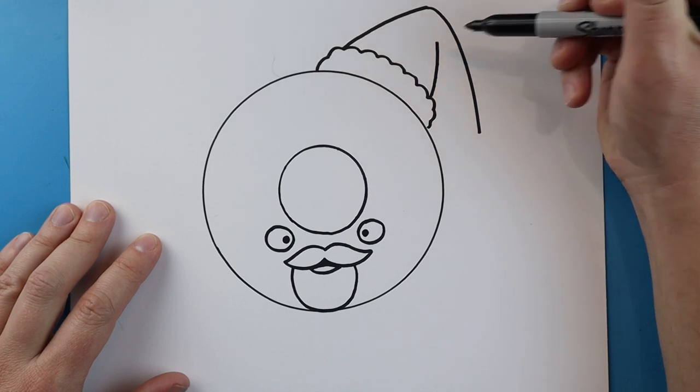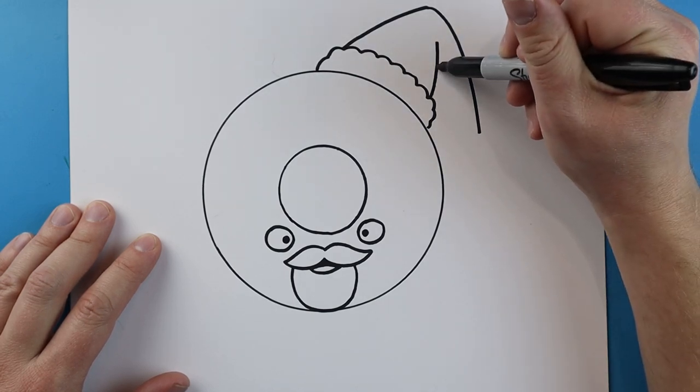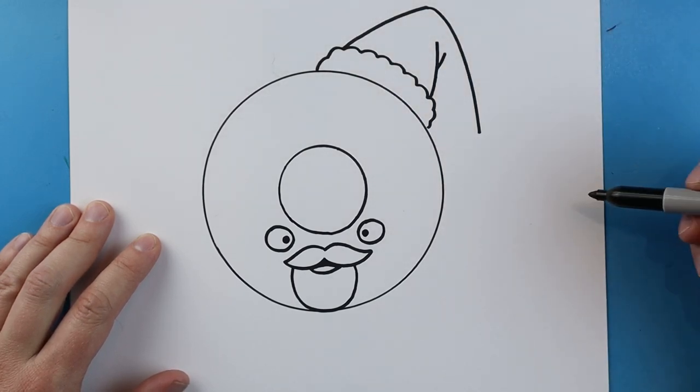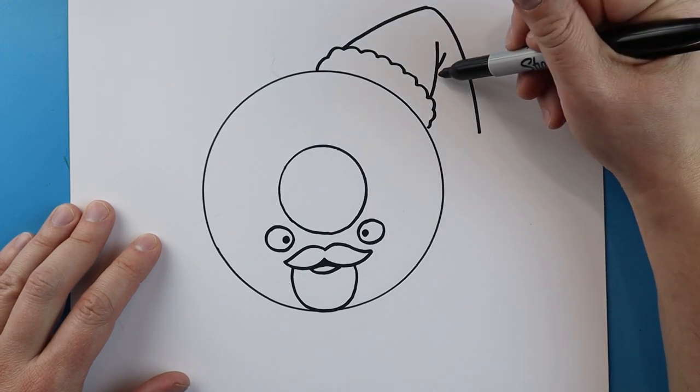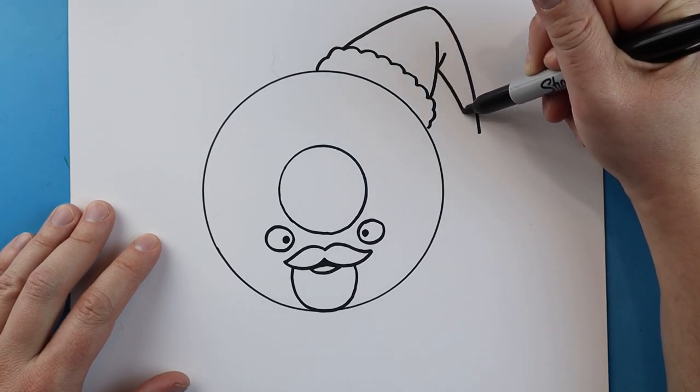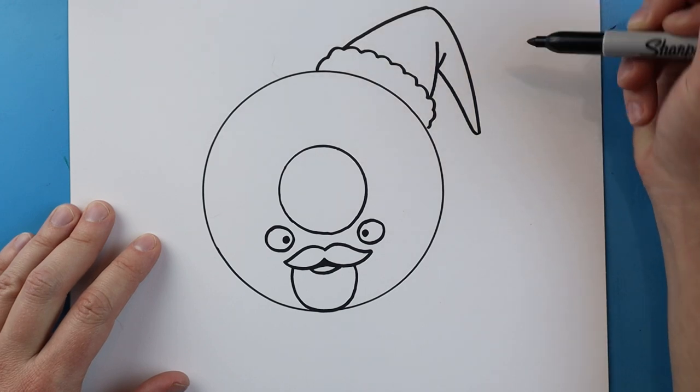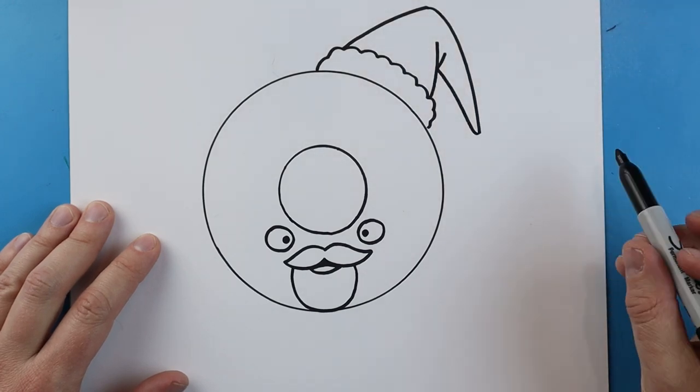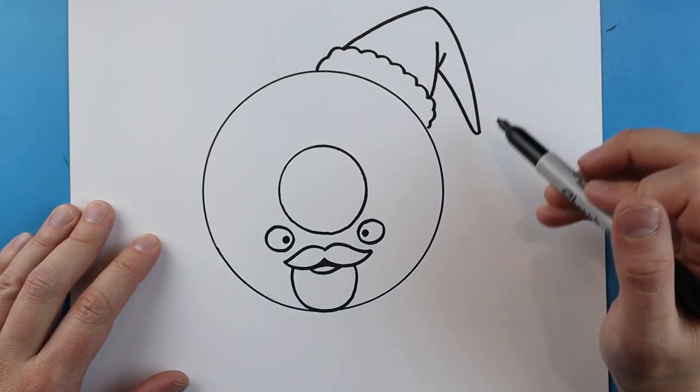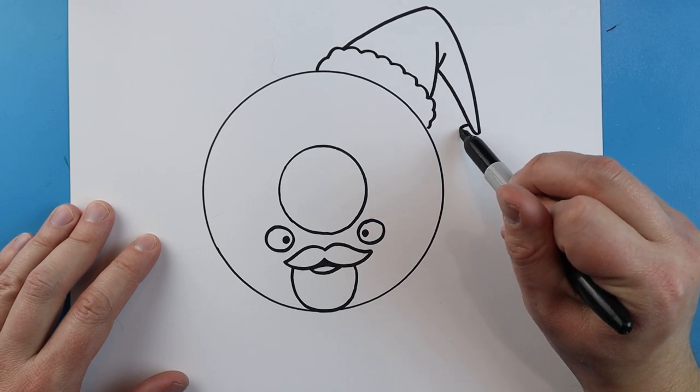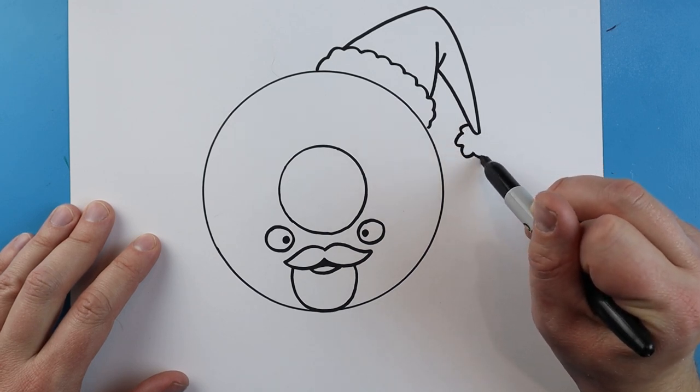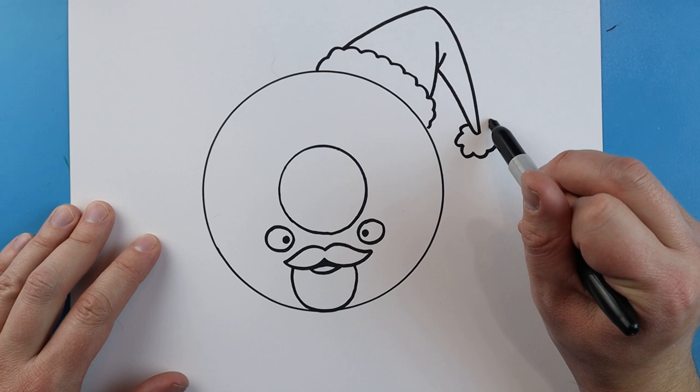Right here we'll make another line that comes up with a smaller one right next to it. Right here we're going to take this line down and connect to this one. Right at the end I'm going to make a little circle shape but it's going to be really bumpy like this.